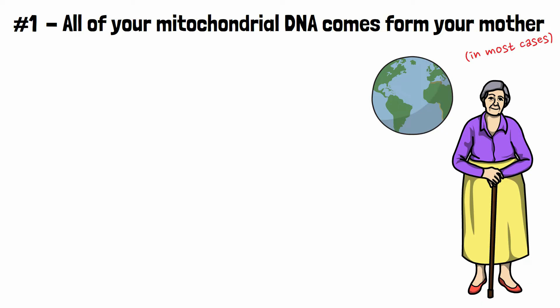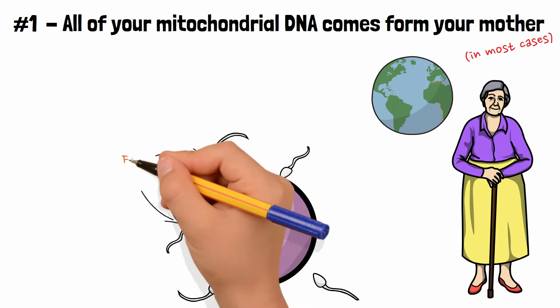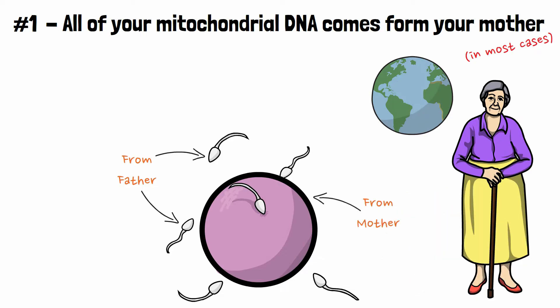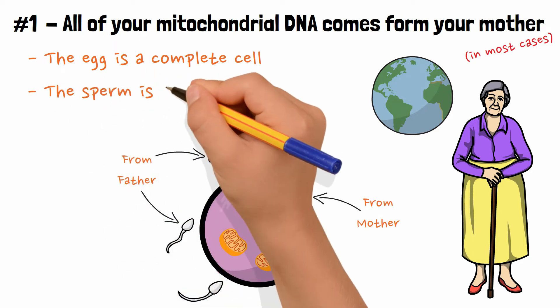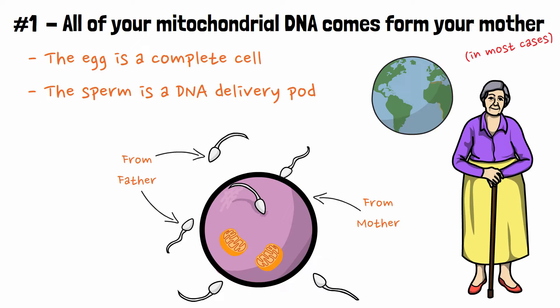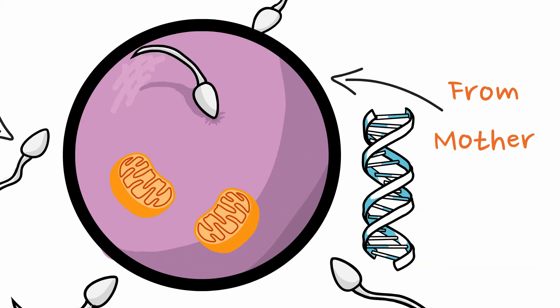This is because you come from a sperm and an egg — the sperm from your father, and the egg from your mother. The egg is a complete cell with all the organelles, including mitochondria. The sperm, on the other hand, is just a DNA delivery pod bringing the father's DNA to the mother's egg. As a result, you most likely got all your mitochondria and its DNA from your mother.